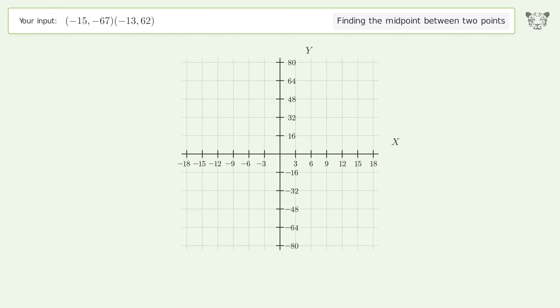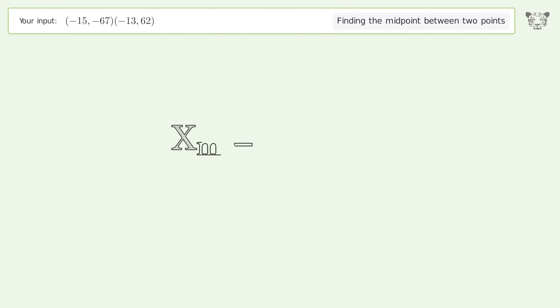The coordinates of Point 1 are x1 = -15, y1 = -67. The coordinates of Point 2 are x2 = -13, y2 = 62. Pm represents the midpoint of the two points.